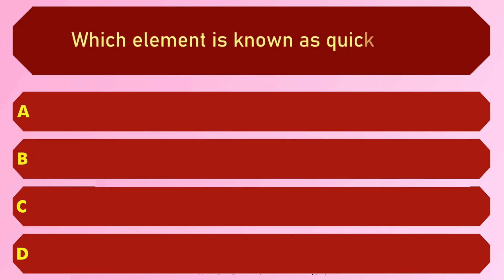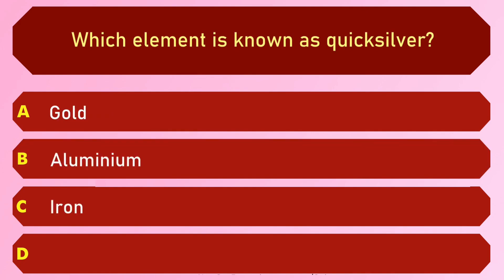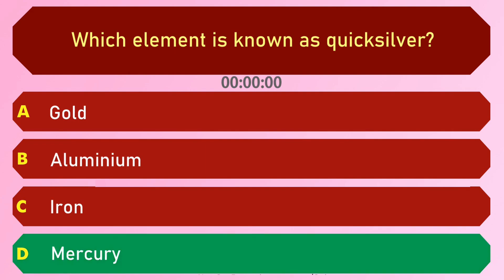Which element is known as quicksilver? Options are: A) Gold, B) Aluminium, C) Iron, and D) Mercury. The answer is option D, Mercury.